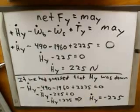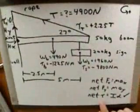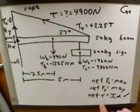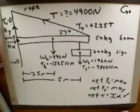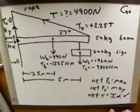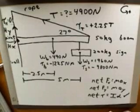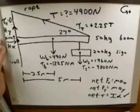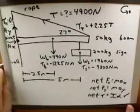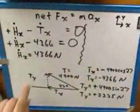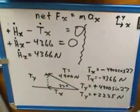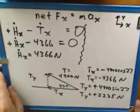Let me emphasize one more time why it was easiest to start with the torque equation. The main reason was that there was no torque from the hinge forces because they were being applied at the pivot. But make sure you recognize that even though the torque from the hinge forces was zero, that doesn't mean there weren't any forces from the hinge. There were forces from the hinge — hinge force X of 4366 Newtons to the right and hinge force Y of 225 Newtons up. There was just no torque from the hinge because it's applied at the pivot.